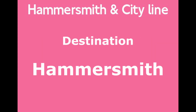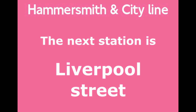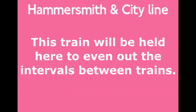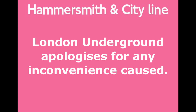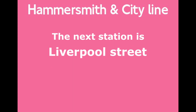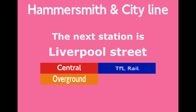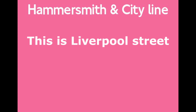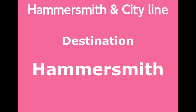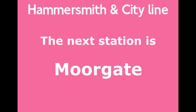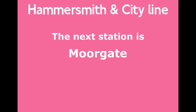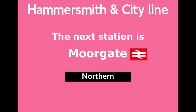This is a Hammersmith and City Line train to Hammersmith. The next station is Liverpool Street. This train will be held here to even out the intervals between trains. London Underground apologises for any inconvenience caused. Change for the Central Line, TfL Rail, London Overground and National Rail Services. This is Liverpool Street. This is a Hammersmith and City Line train to Hammersmith. The next station is Moorgate. Change for the Northern Line and National Rail Services. This is Moorgate.